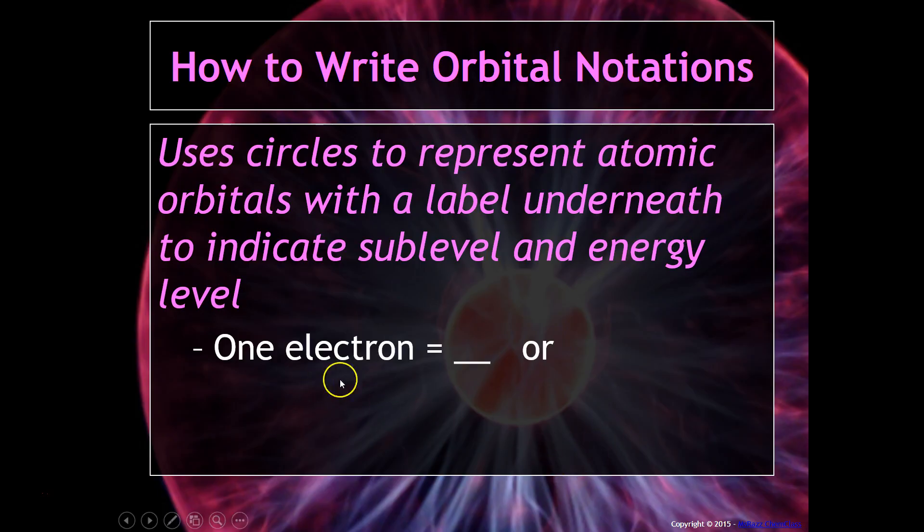You could have one electron look something like this, where you have a line and an arrow up or a circle and an arrow up. You could even have two electrons within a circle. But there are a lot of different variations. So just keep in mind that these arrows are supposed to represent electrons and the circle or the line is supposed to represent the atomic orbital.